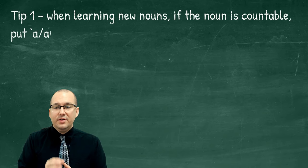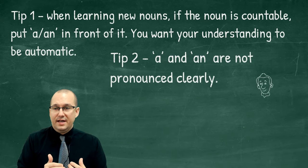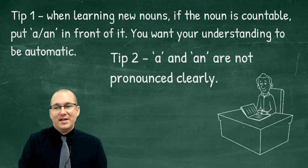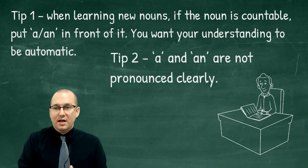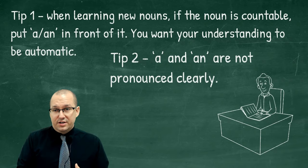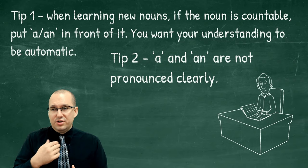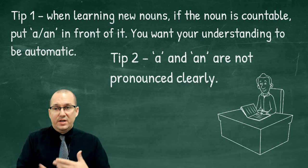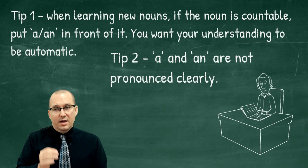Here's a learning tip: when learning new nouns, if the noun is countable, put an 'a' or 'an' in front of it so your understanding becomes automatic. If you're learning the word 'cat,' write down 'a cat.' As your English gets more advanced and you learn the word 'benefit,' check your dictionary — it will say countable — and then write in your vocabulary journal 'a benefit.' Always say it that way and it just becomes natural. We do this in French too, putting the article in front of a noun and studying it that way. Do the same thing with English articles.